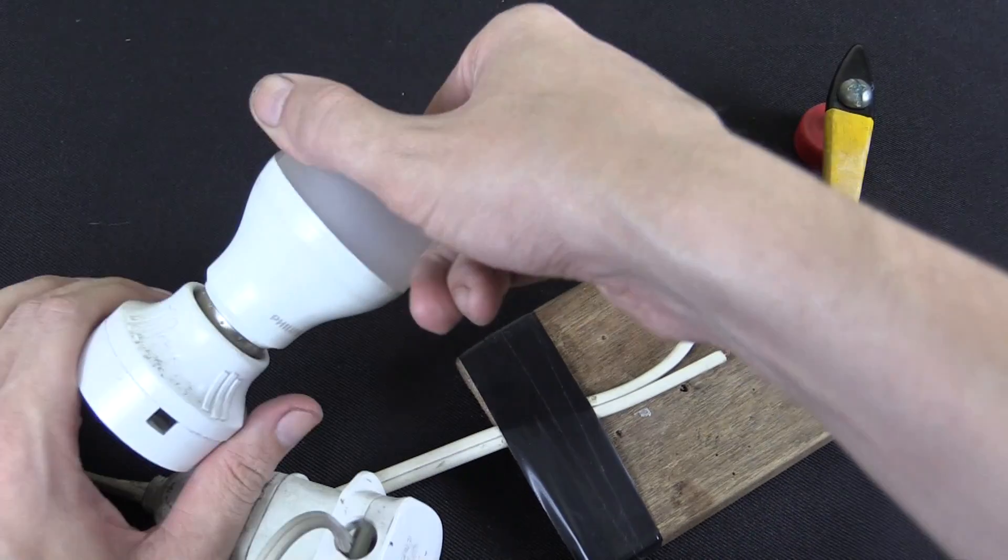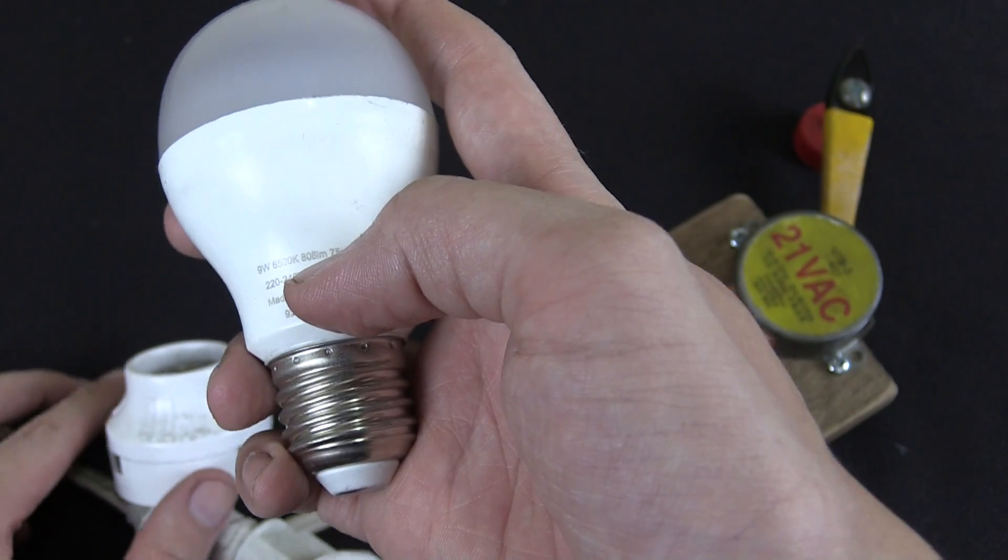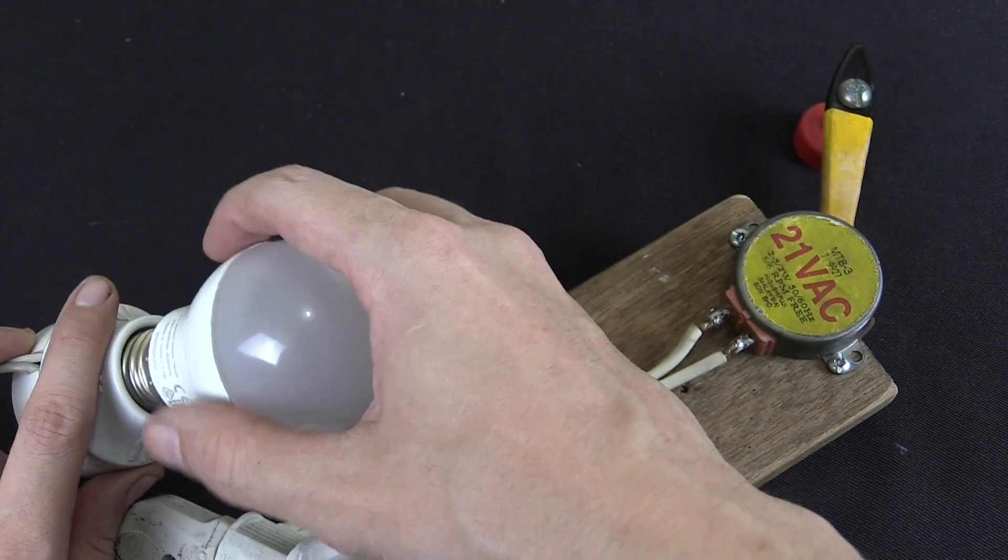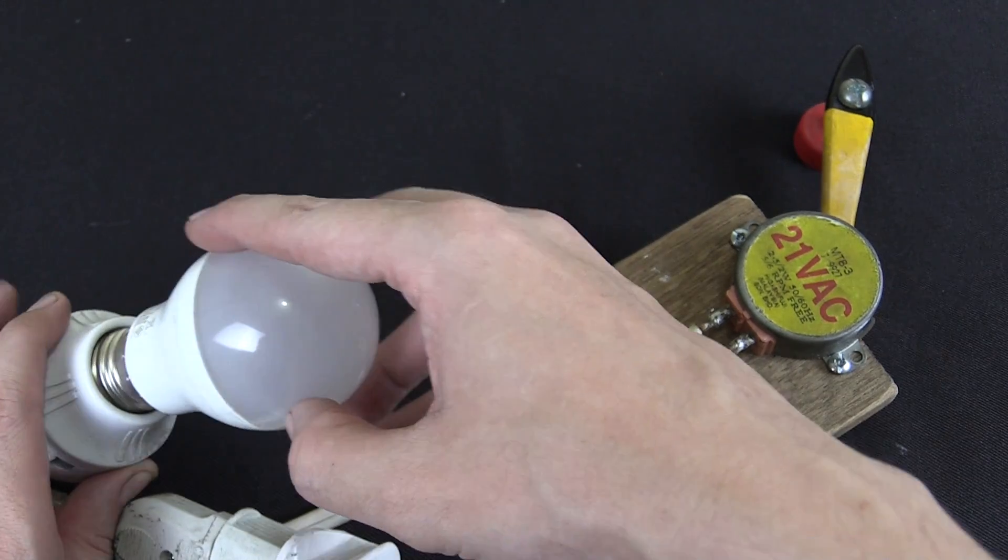Now this is a 220 volt bulb, let me check the wattage. So hopefully you can see there, this is a 9 watt LED bulb, although we're not lighting it up to its full brightness. I'd say we're getting around 2 or 3 watts out of this.